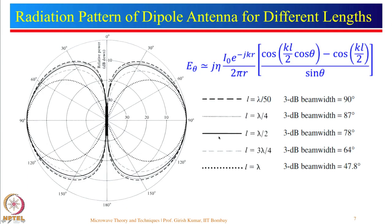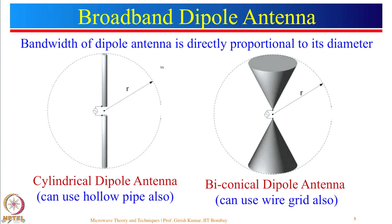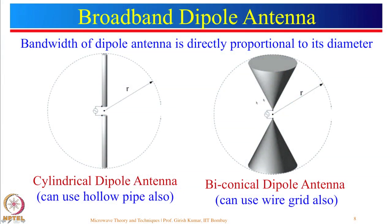The radiation pattern varies with dipole length. For a very small dipole, 3 dB beamwidth is about 90 degrees. As length increases from lambda/50 to lambda/4 to lambda/2, the half-power beamwidth decreases, meaning gain increases. For broadband dipole antennas, bandwidth is directly proportional to the diameter. However, diameter must remain less than lambda/10, which limits bandwidth. A biconical dipole antenna can provide very large bandwidth.